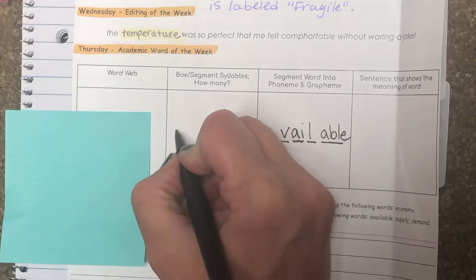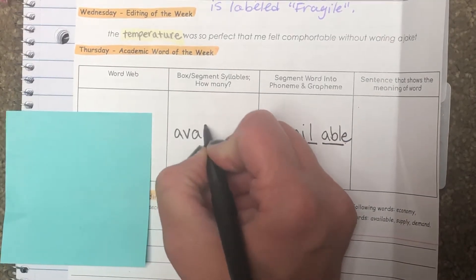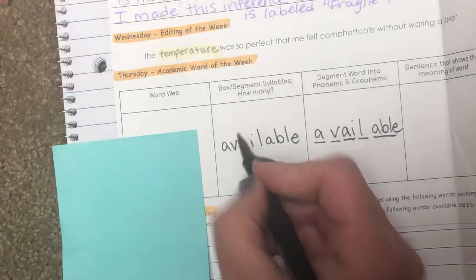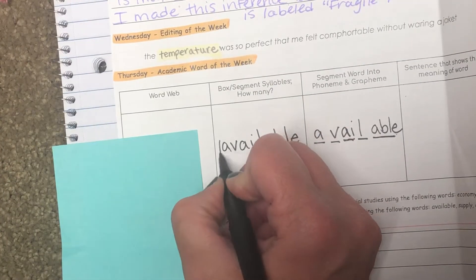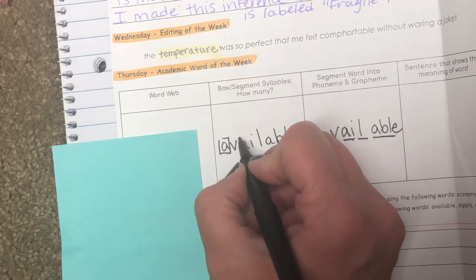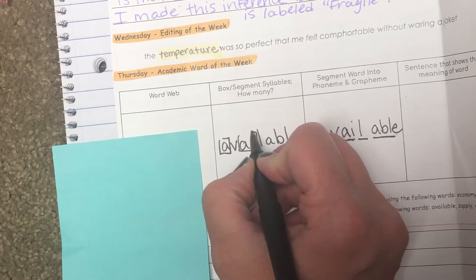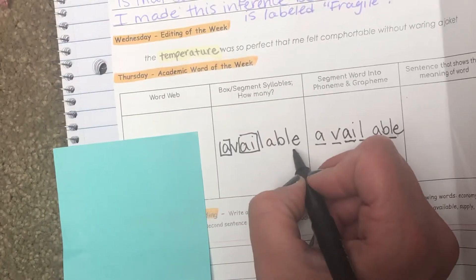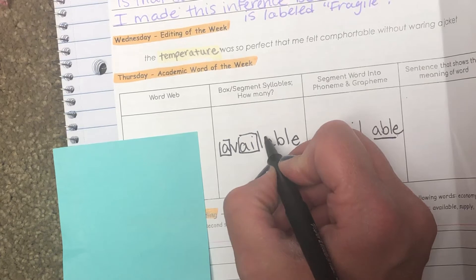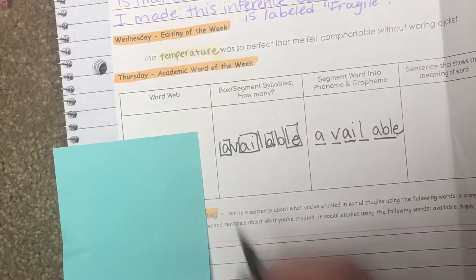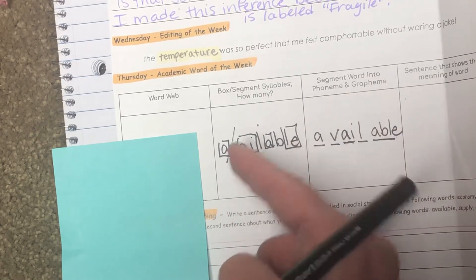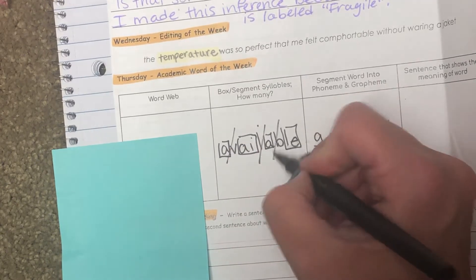Now we're going to go ahead and box off the syllables. Syllables are vowel sounds. So we hear: a, a, a, al. And then -able — even though it's our suffix, we actually have two vowel sounds in there. We hear 'a' and then 'ul.' So: a, v, a-veil, a-bull. We have four syllables.